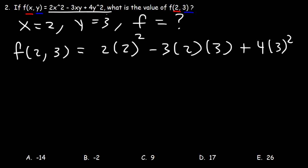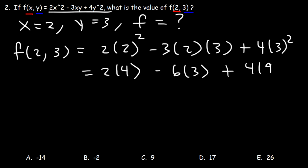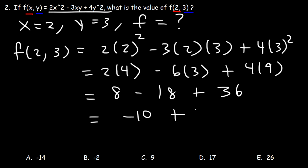Using this equation, 2 squared is 4, 3 times 2 is 6, and 3 squared is 9. 2 times 4 is 8, 6 times 3 is 18, and 4 times 9 is 36. 8 minus 18 is negative 10, and negative 10 plus 36 is 26. So therefore, e is the right answer.